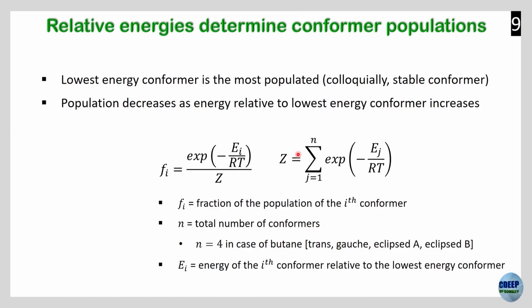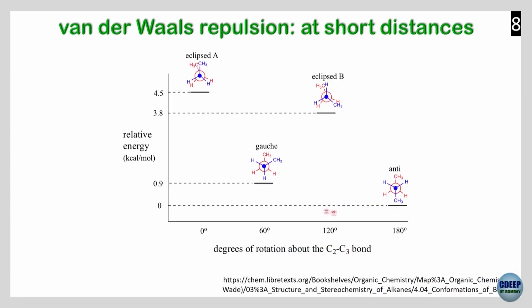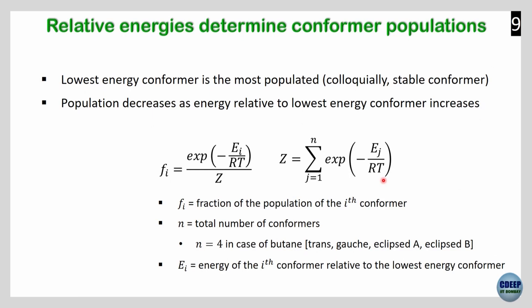Is it clear why the energy profile of butane looks like this? We are going to use this as the basis to understand the Ramachandran MAP. The conformation angle is on the x-axis, relative energy on the y-axis. The anti-conformation has the lowest relative energy, set as zero. Gauche is 0.9 kcal/mol, first eclipse is 3.8, and the D eclipsed conformation is 4.5 kcal/mol. You do not have to remember these numbers — just know that eclipsed conformations are higher in energy than staggered.